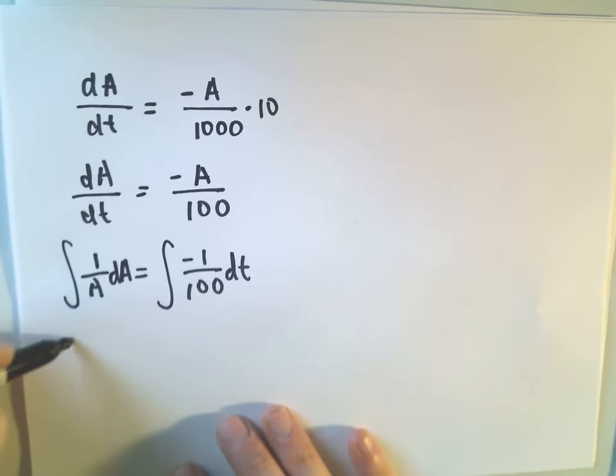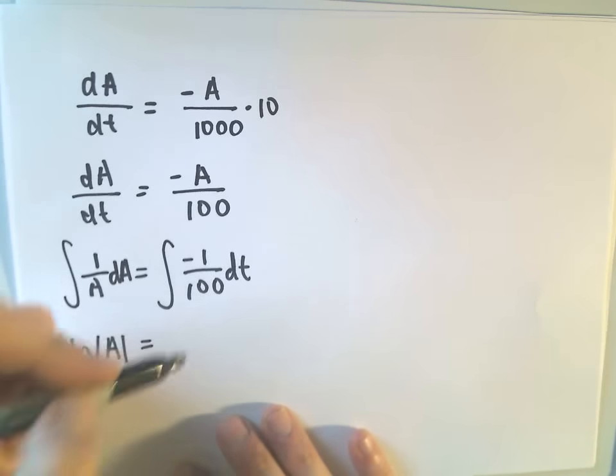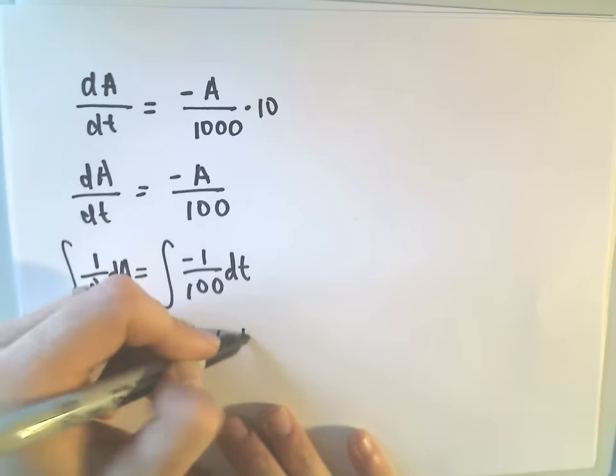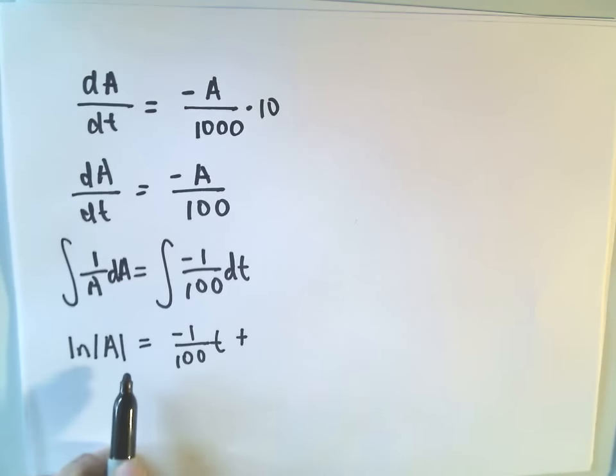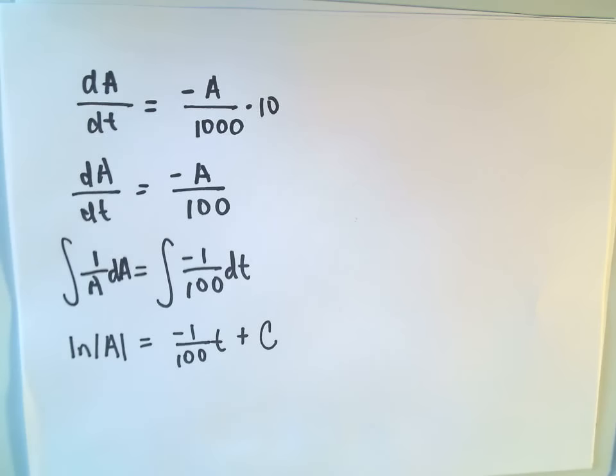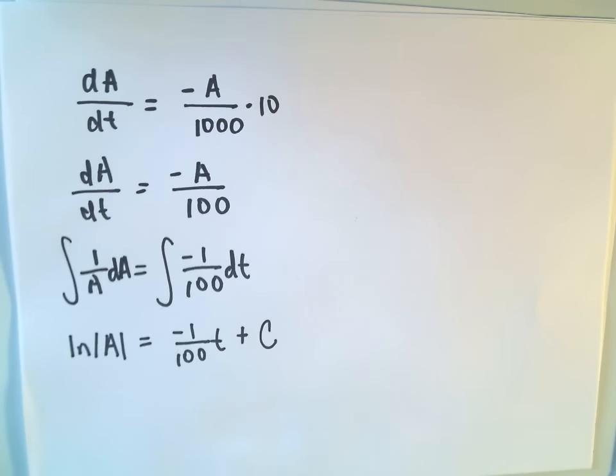So if we integrate the left side, we get the natural logarithm of a, absolute value. And then we'll have negative one over 100 t. And we could put a plus c1 on the left or a plus c2 on the right for our constants, but I'm just going to imagine I've combined them and I've got one arbitrary constant.